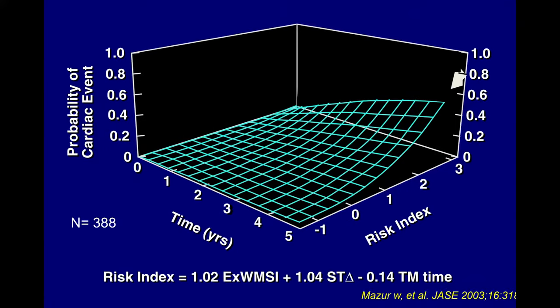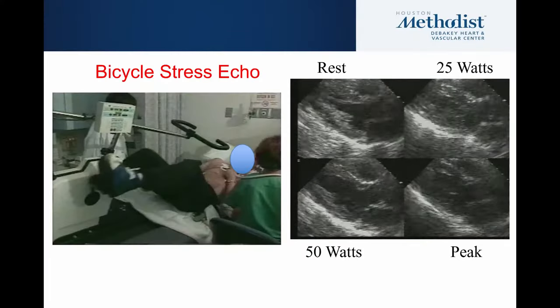One of the beauties of the treadmill is that you can also incorporate treadmill data. In one publication, we incorporated the stress echo findings — specifically the exercise wall motion score index — with the ST shift during exercise and the duration of exercise, creating a risk index that allowed an even more precise estimation of event rate over a five-year follow-up.